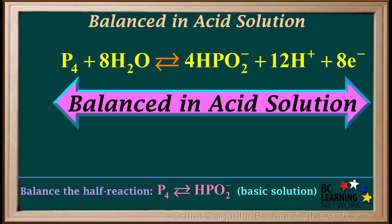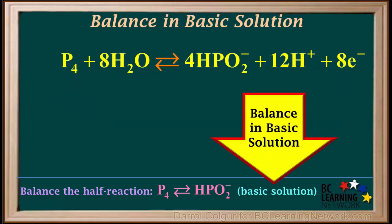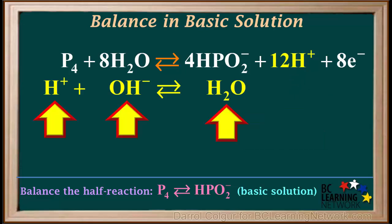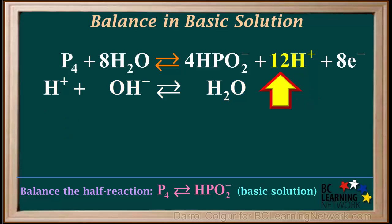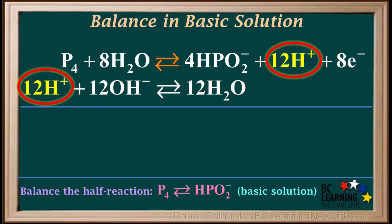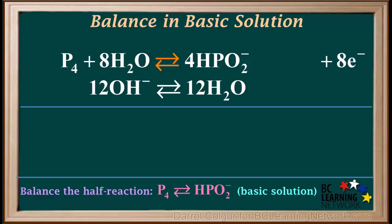This half reaction is now balanced in acid solution. However, we're asked to balance it in basic solution, so we have to cancel out these 12 H⁺ ions on the right. We do this by adding the equation H⁺ plus OH⁻ gives H2O. The H⁺ is on the left side, so it can cancel the H⁺ on the right side in the top equation. But because there are 12 H⁺ we need to cancel, we add the coefficient 12 to all three species in this equation. Now we have 12 H⁺ on the left side and on the right side, so these can be canceled.